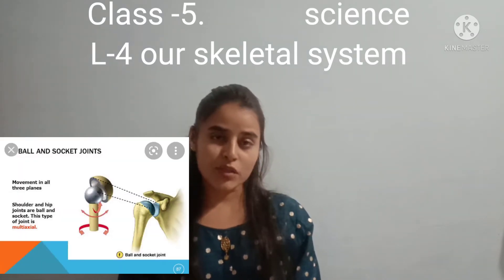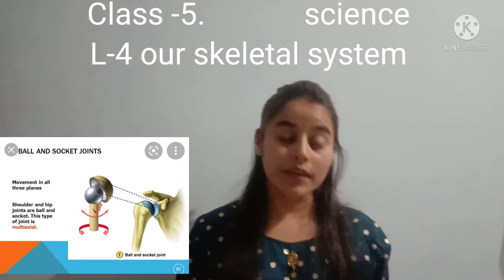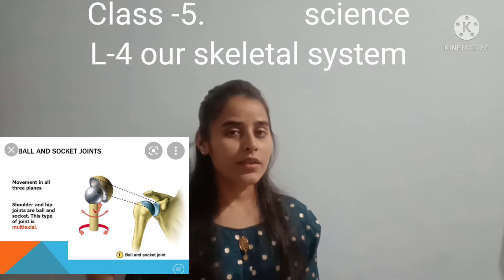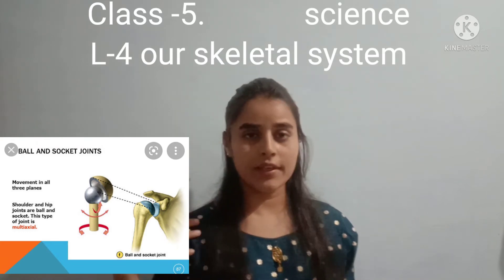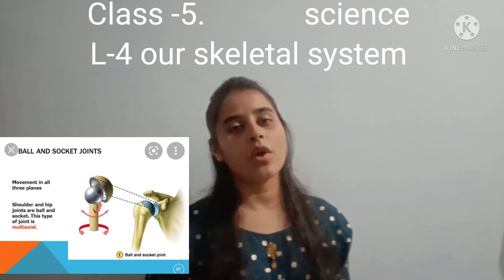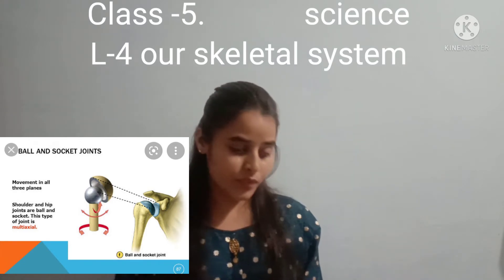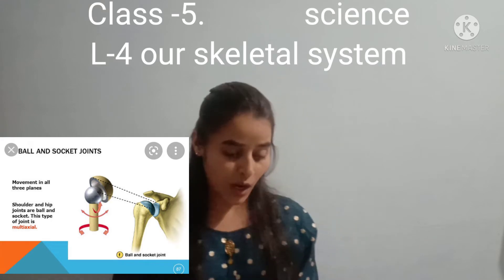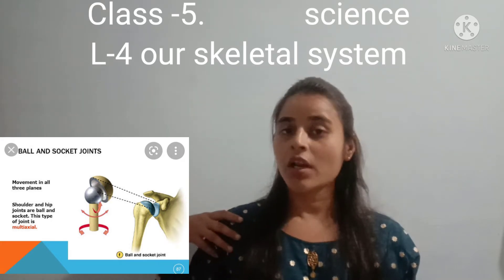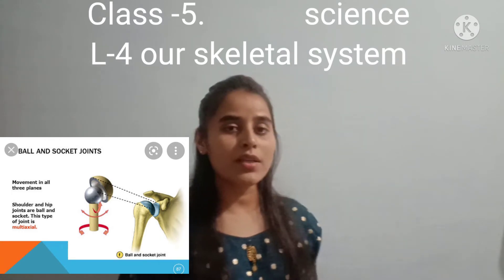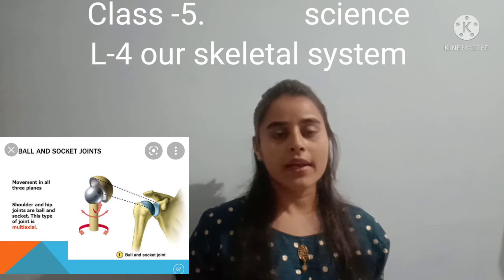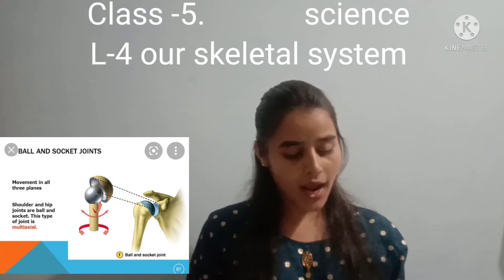Next, the ball and socket joint. It is seen in the bones of the hip and shoulder. A ball and socket joint is present in the shoulder and the hip. This joint allows movement in many directions. Our hands can move in all directions because of the ball and socket joint in our shoulder, and our arms and legs can also move around.